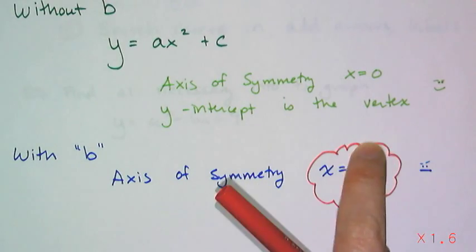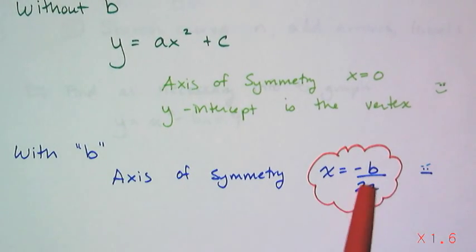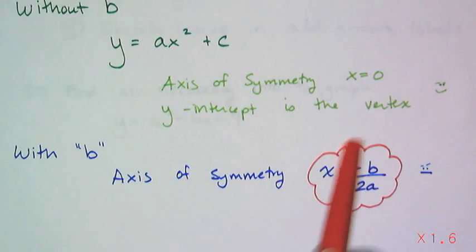And this is super important because this axis of symmetry is the most important part graphically of the parabola, because with it we can find the vertex and a bunch of additional points. So x equals the opposite of b over 2a. That is the formula to find the axis of symmetry for a quadratic function.